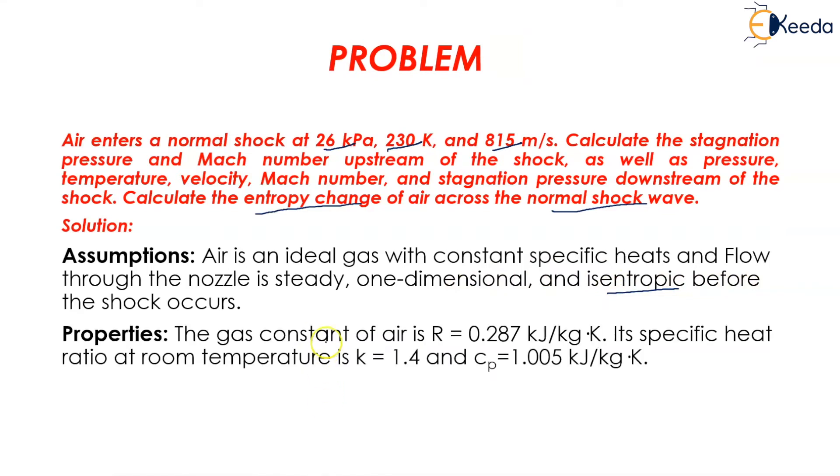Properties of the gas: the gas constant of air R is taken as 0.287 kJ per kg Kelvin, and its specific heat ratio at room temperature